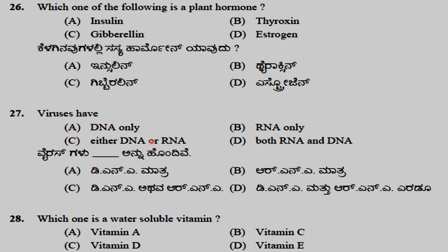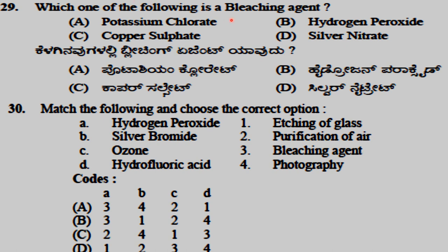The color of a flower is due to anthocyanin. Gibberellin is a plant hormone. Viruses have either DNA or RNA. Vitamin C is a water-soluble vitamin. Hydrogen peroxide is a bleaching agent. Silver bromide is used in photography. Ozone is used for purification of air.